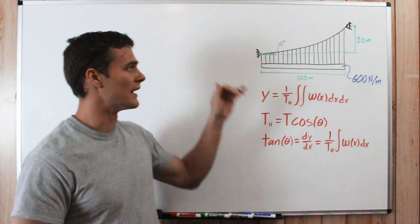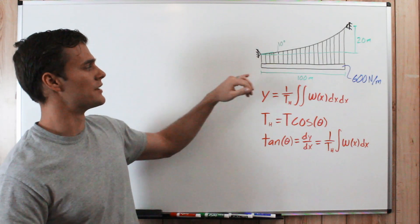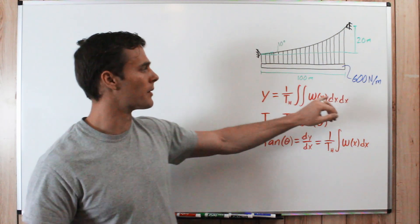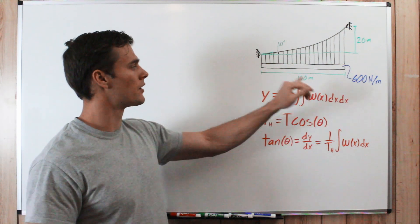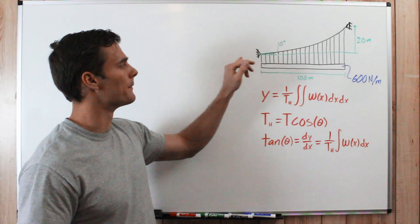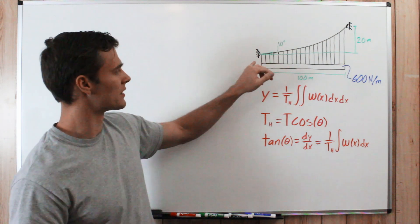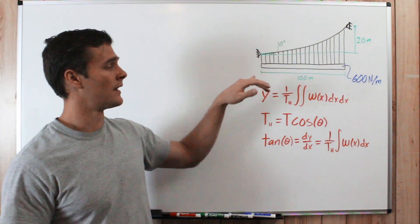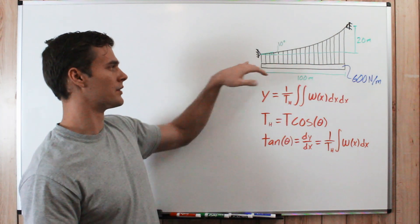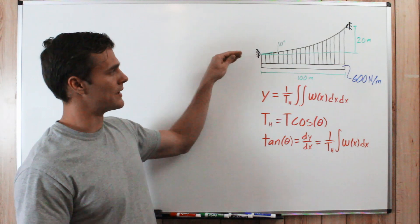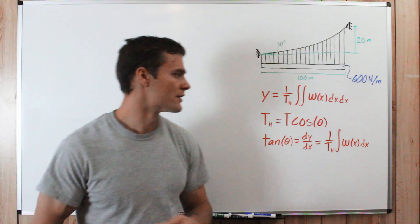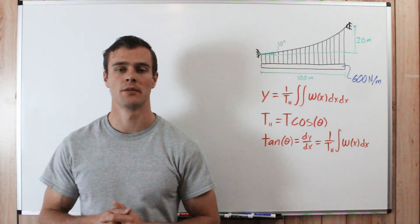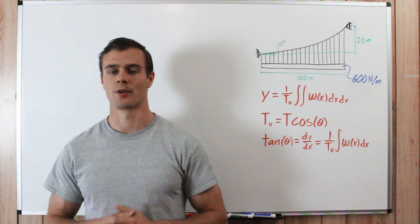We have a cable with a distributed load hanging under it that weighs 600 newtons per meter. It is 100 meters long — that is the horizontal distance between the two supports — and vertically they are 20 meters apart. At one end, the cable is inclined and begins at 10 degrees. We need to find the maximum tension in this cable.